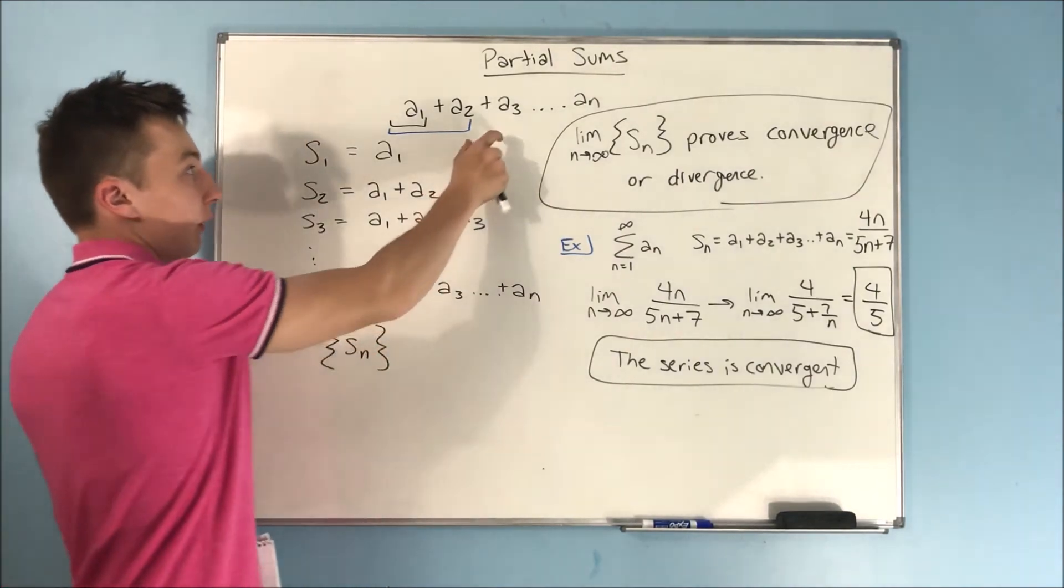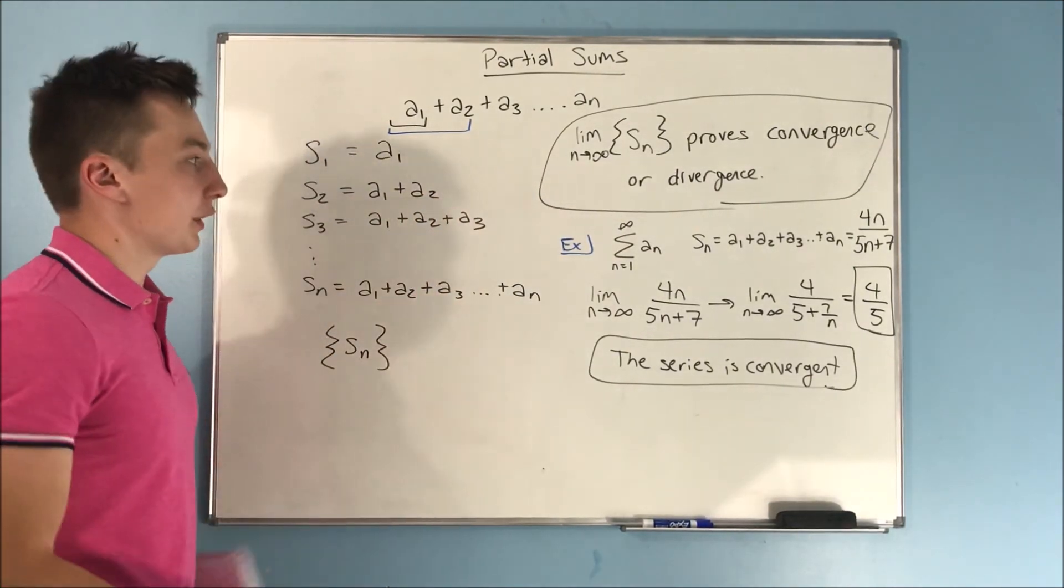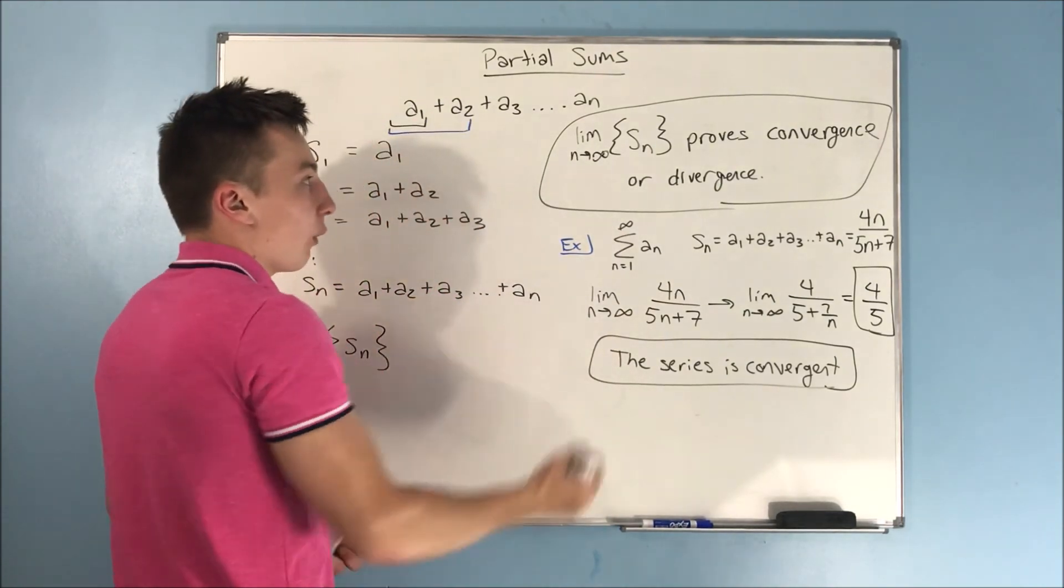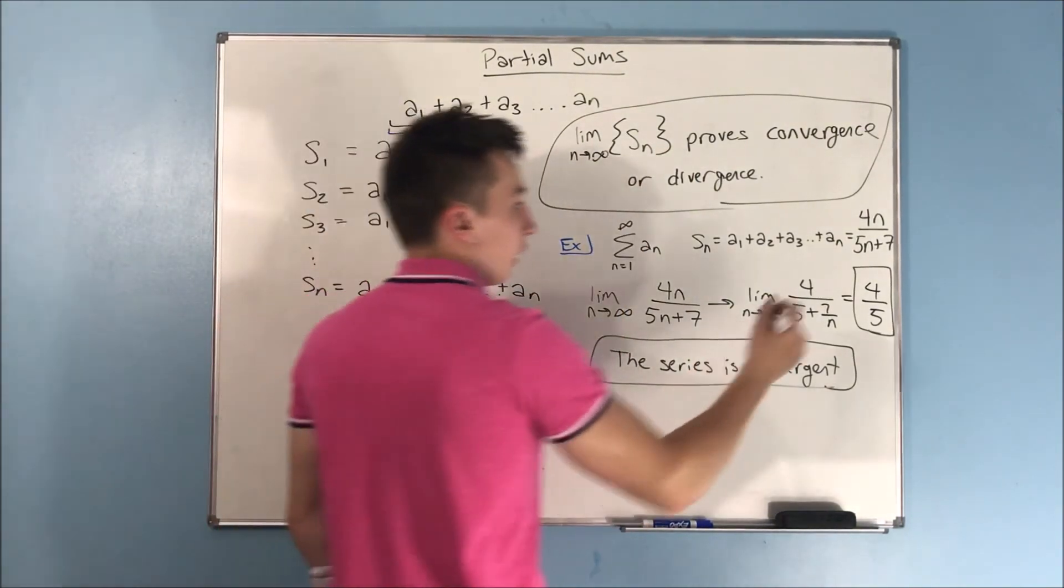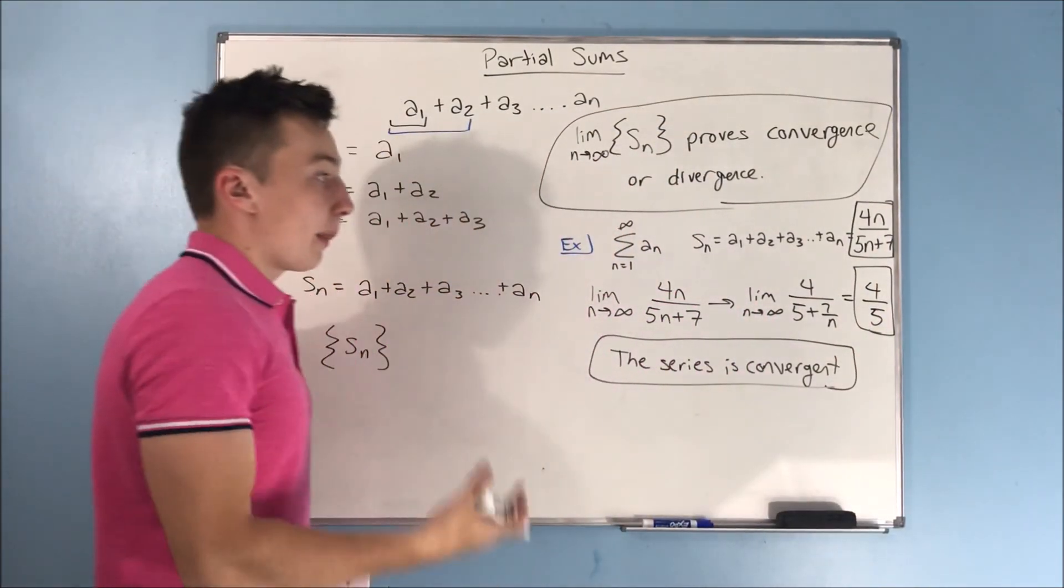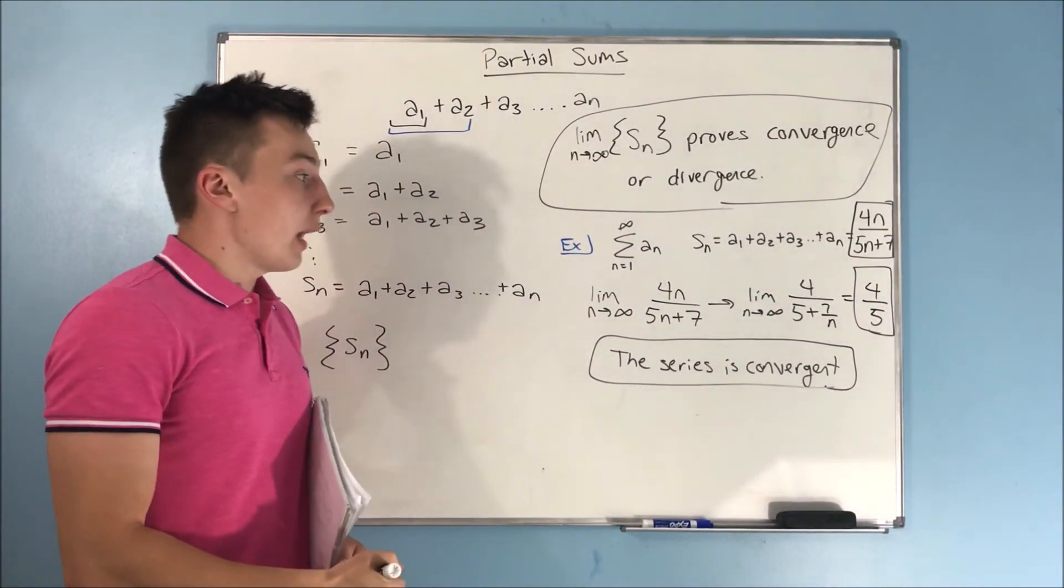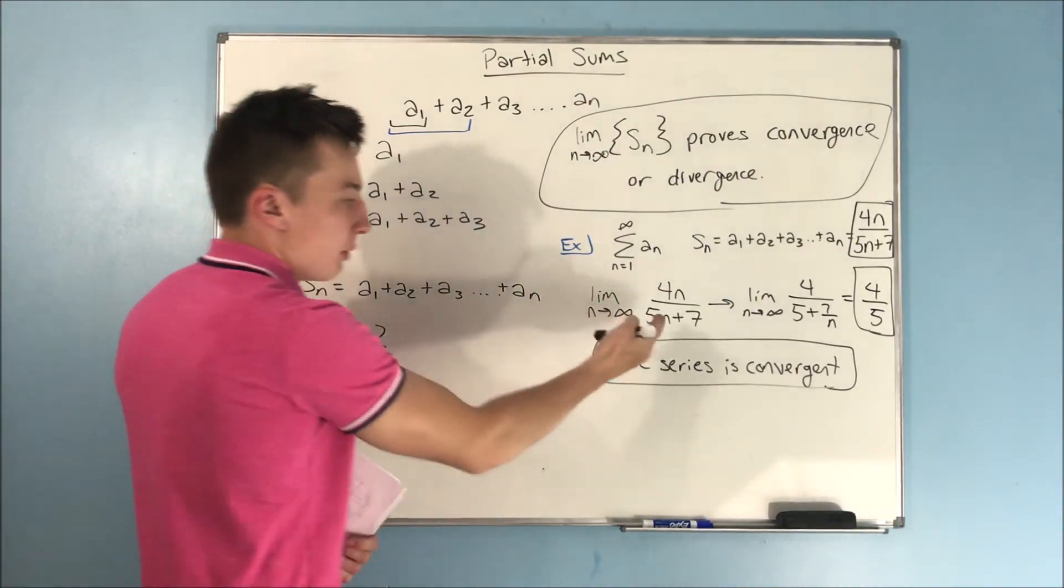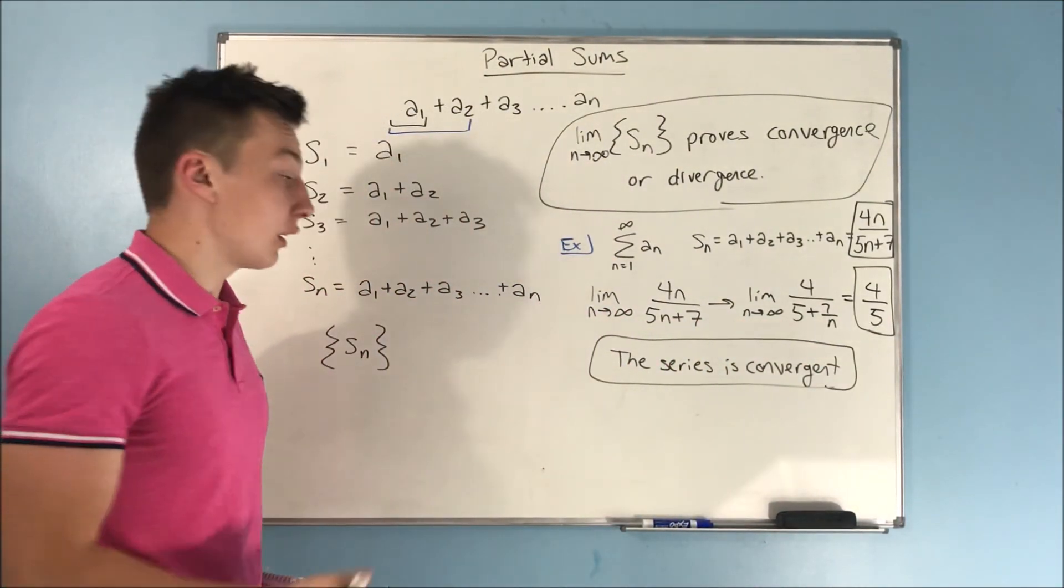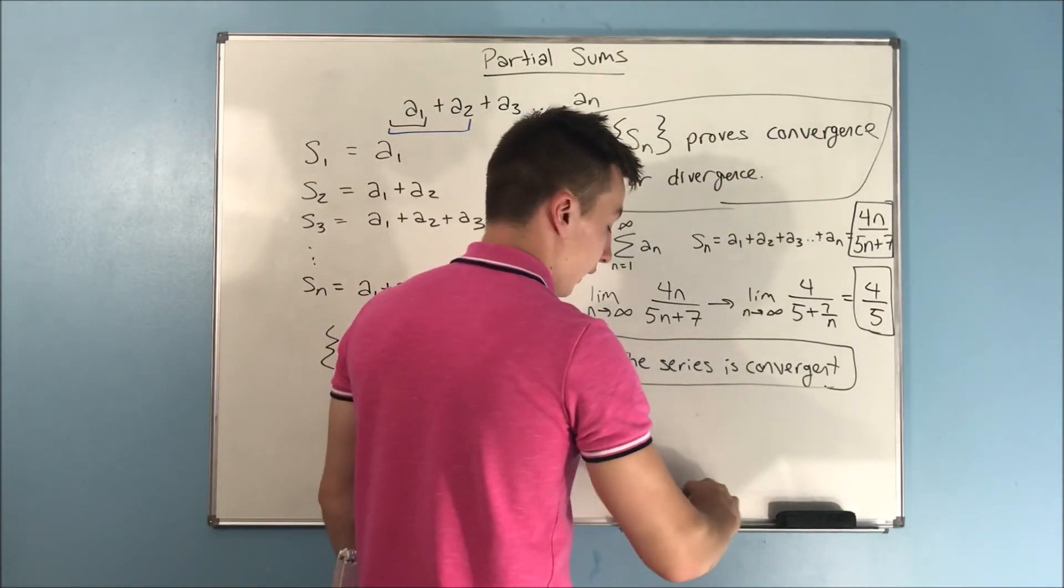That will literally say whether the series is convergent or divergent. We did a little quick example of that right here. We got our sequence of s sub n, that's right here. That's another way to write a sequence and we just computed that limit. And that was 4 over 5, that's a finite answer. So, we found out that this series is convergent.